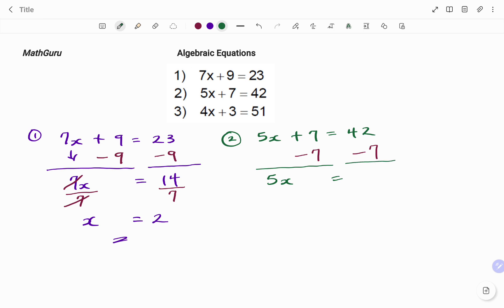And then between 5 and x, we have multiplication. The inverse is division, so therefore I'm going to divide both sides by 5. I have 5 divided by 5 on my left-hand side, that's 1, so I'm left with x equals 35 divided by 5, that's 7.